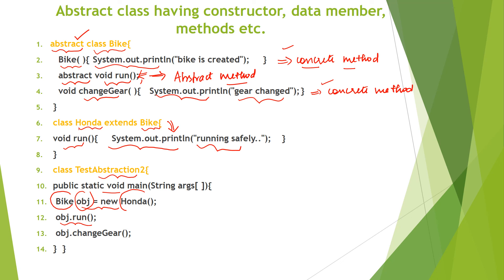An abstract class has at least one or more abstract methods and can also include concrete methods — it can have both. But even if there is just one abstract method, that class must be declared abstract, and the implementation of those abstract methods must be provided in the immediate subclasses. I hope you understood this topic — thank you everyone.